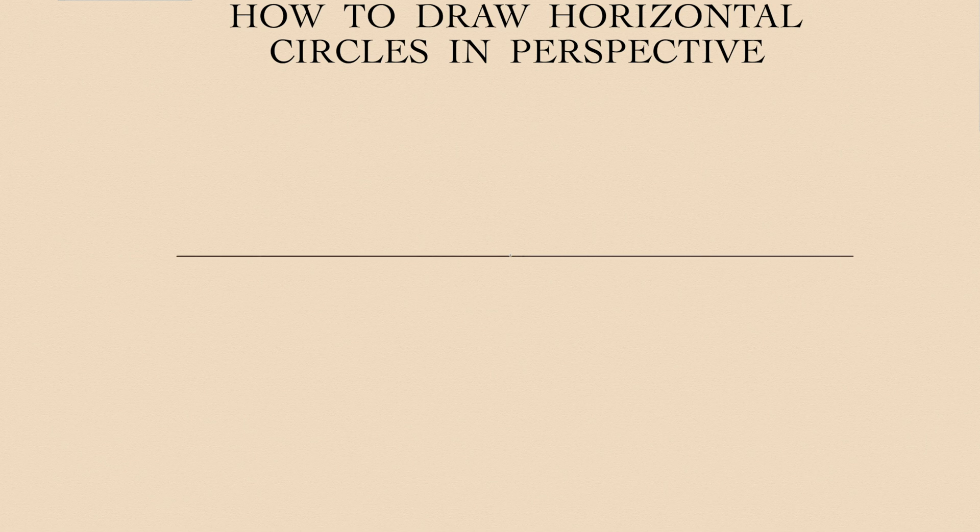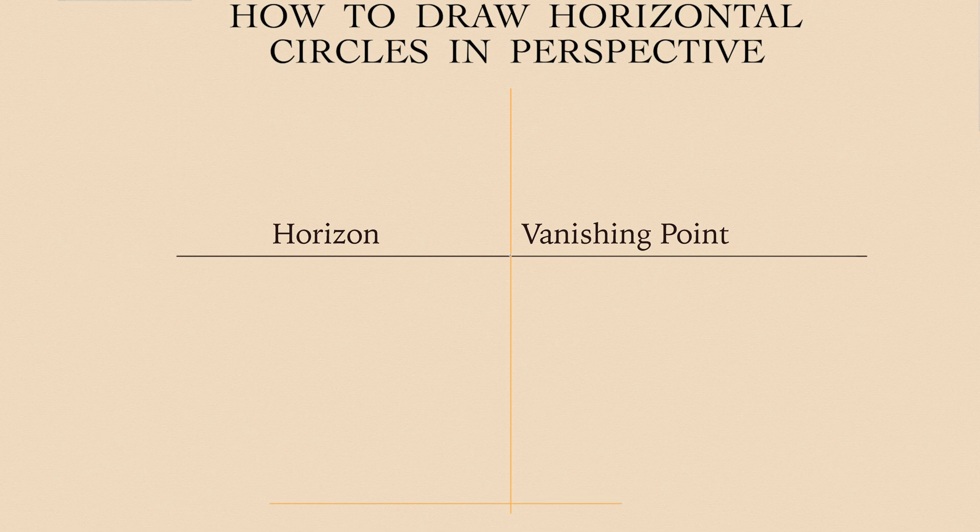Now let's make another drawing. The horizon line is placed in the middle. Vanishing lines span from the vanishing point. These lines help us to build squares in one-point perspective.